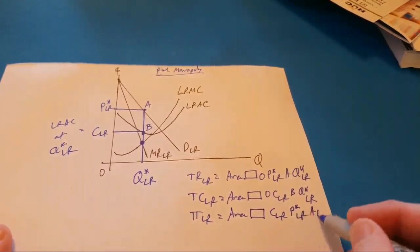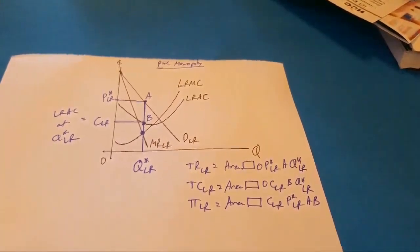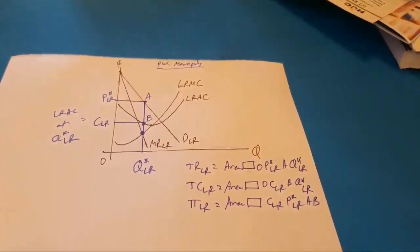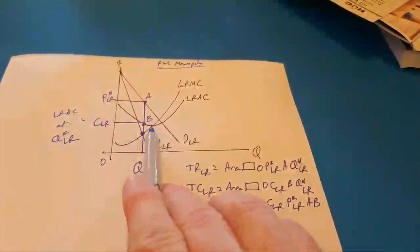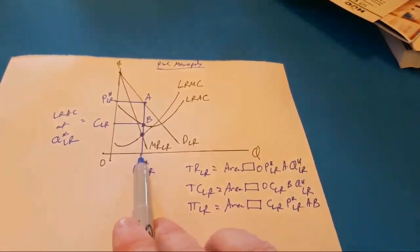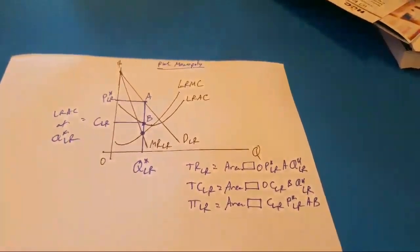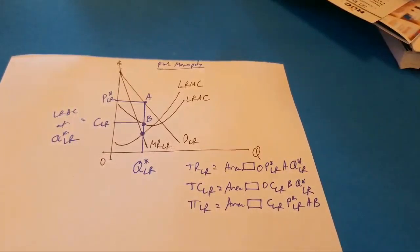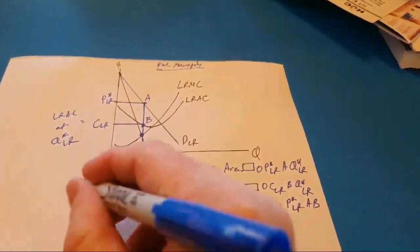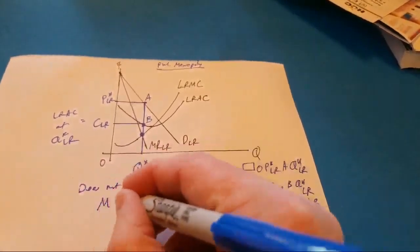Pure monopolies will earn long-run economic profits. Some oligopolies will as well, but we don't do graphs for oligopolies — we do strategic behavior instead. Does this firm achieve minimum efficient scale? The minimum LRAC is to the right of long-run Q*, so long-run Q* is to the left of it where LRAC is higher — that is not minimum LRAC. Remember what a monopoly does: they restrict output of a product that's a necessity, making it more scarce to drive prices up and get bigger profits. This firm does not achieve minimum efficient scale — it is underproducing and undersized. It may be profitable, but it is not efficient.